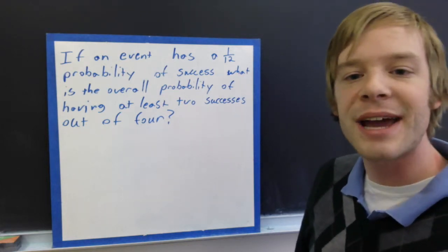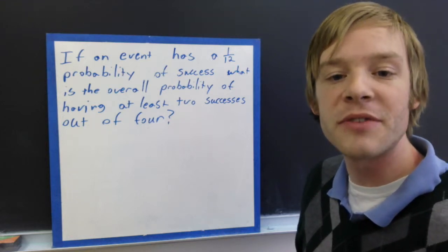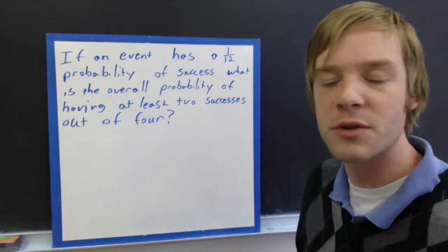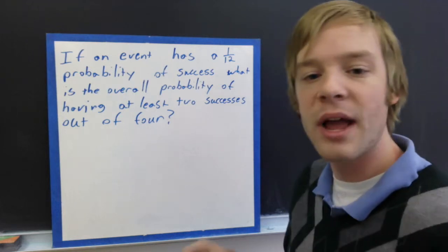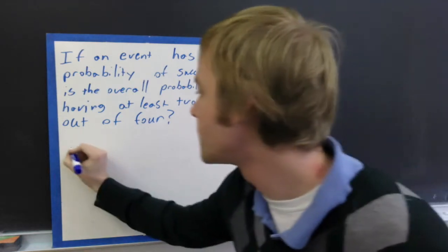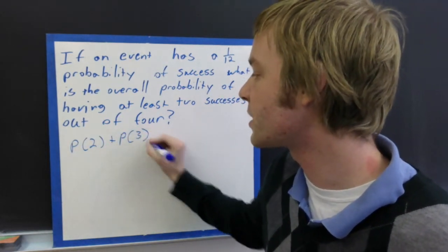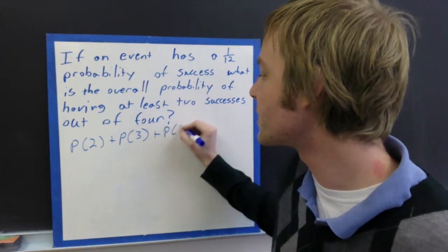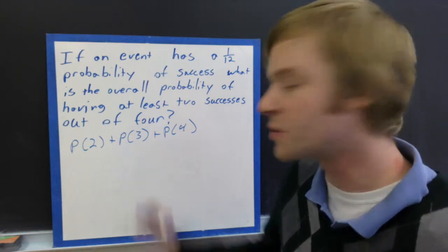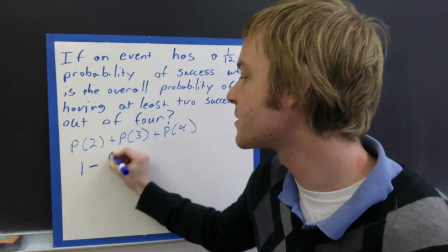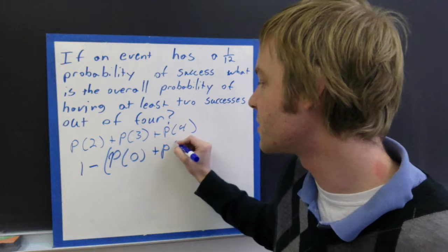So if an event has a 1 out of 12 probability, same as last time, of success, what is the overall probability of having at least 2 successes out of 4? So we could have 2, we could have 3, we could have 4 successes out of 4. And we could calculate out the probability of 2 plus the probability of 3 plus the probability of 4, but that's a lot of calculations.